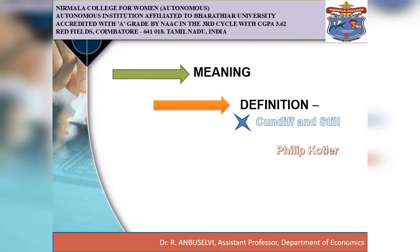As per Philip Kotler, demand forecasting means it is the company's forecast. That is, the company's forecast is the expected level of company sales based on the chosen marketing plan and assumed marketing environment. From these two definitions we come across three important components: market forecasting depends upon marketing plan, competitive forces, and business environment.